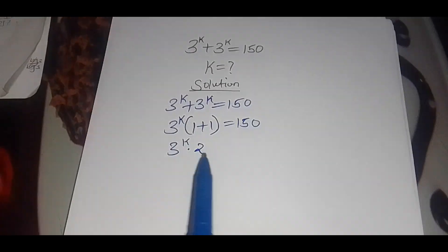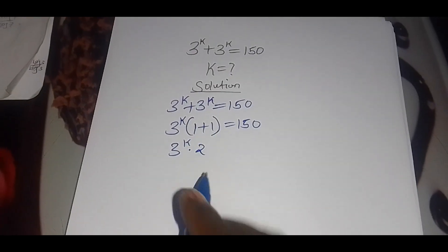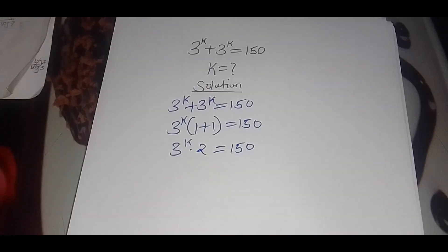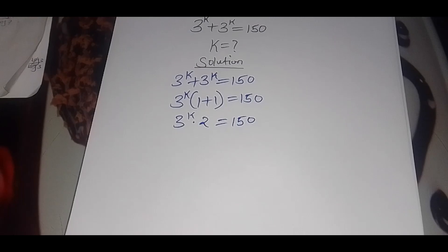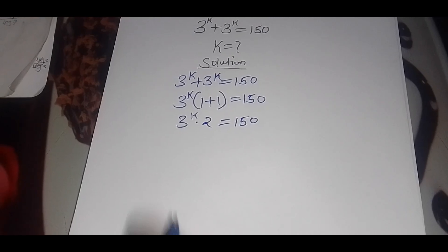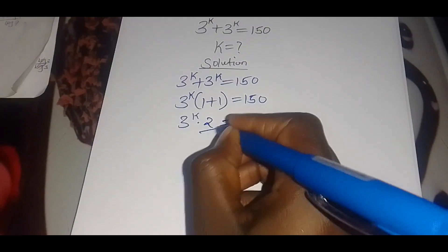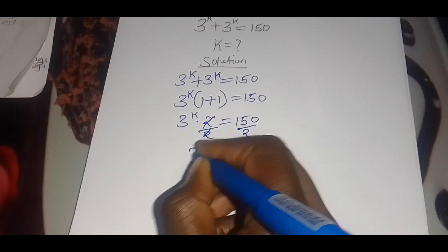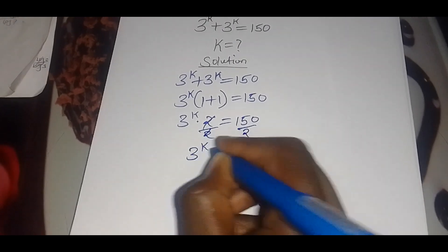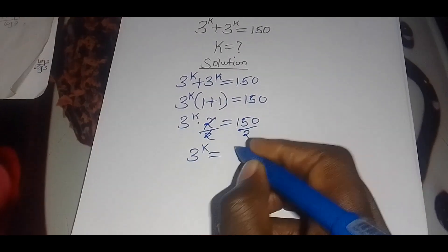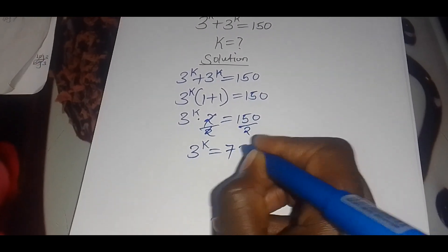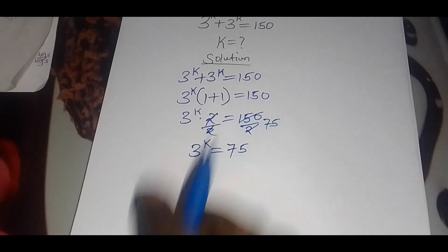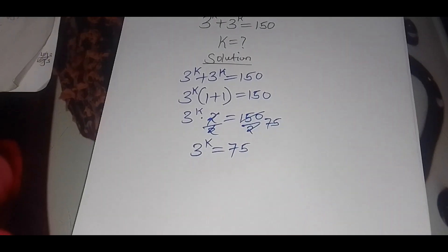Multiplying, 1 plus 1 gives us 2, so we have 3 raised to power k multiplied by 2 equals 150. We divide both sides by 2, so that we have 3 raised to power k equals 75.